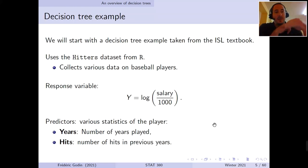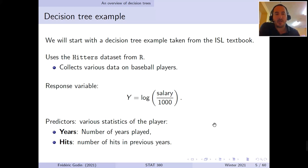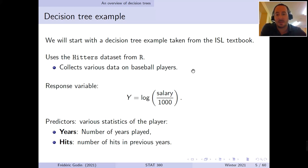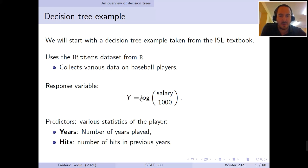To introduce decision trees, we start with a simple example from the ISL textbook using the Hitters dataset, which can be loaded in R. This dataset contains various data on several baseball players. One of the variables is the player's salary, which we would like to predict as the response variable. Instead of taking the salary directly, we normalize it by dividing by one thousand and taking the log.